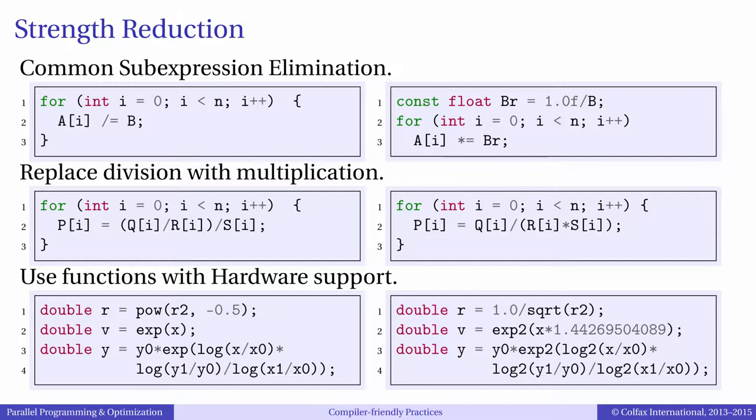Strength reduction can be applied to transcendental math too. For example, instead of using the function pow to raise a number to power negative one-half, we can use the function 1 over sqrt. It works better because the reciprocal square root has a more efficient implementation than the power function in hardware on Intel Xeon Phi processors. This optimization may yield tens of percent in performance.